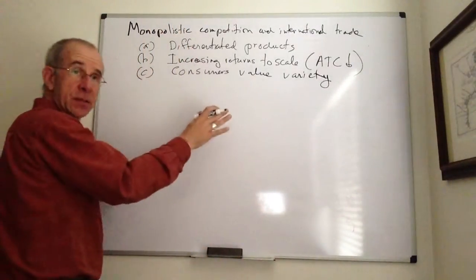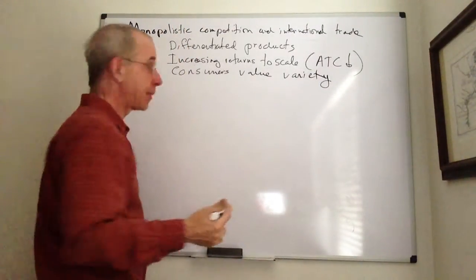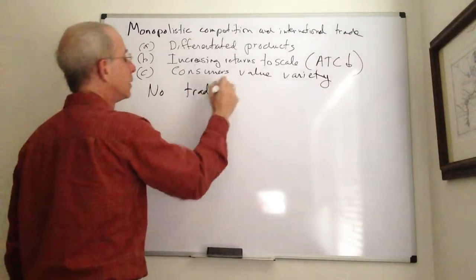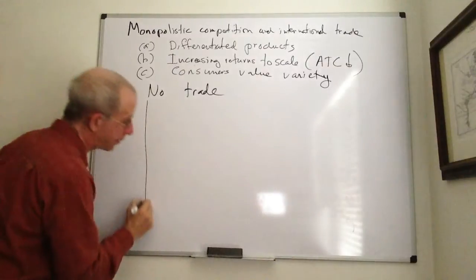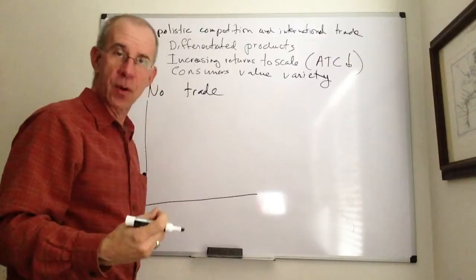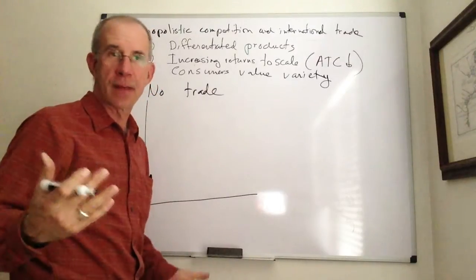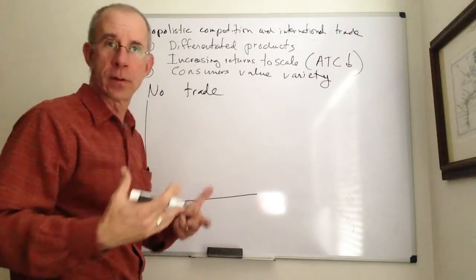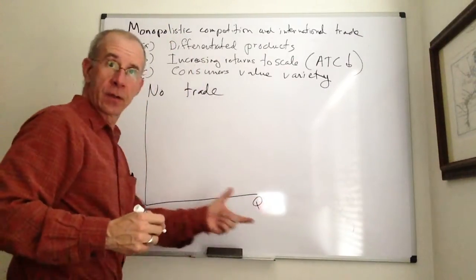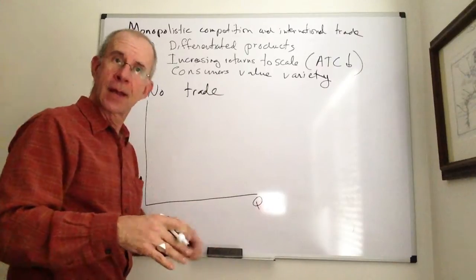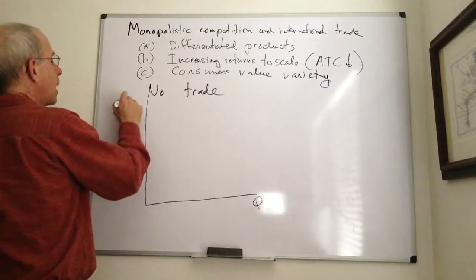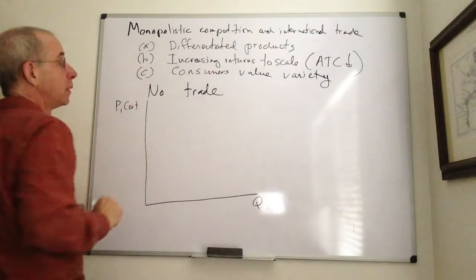So, given this setup in the basic monopolistic competition story, I want to think about a particular producer making a particular product. And you can think about this as Ford producing cars. So this is the quantity of cars produced by Ford, not the automobile market generally, but for Ford. You've got the price and costs of Ford.